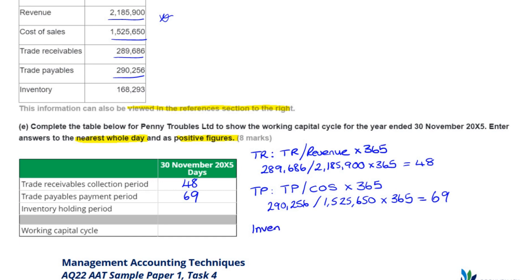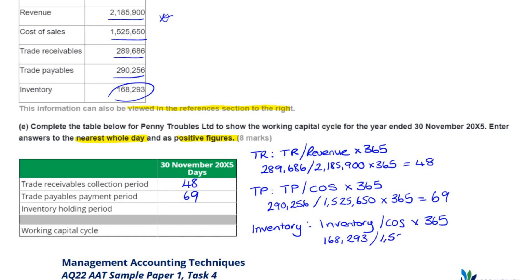The inventory holding period formula starts with inventory — reflecting the name of the calculation — divided by cost of sales, because it's related to production, multiplied by 365. Using the inventory figure of 168,293 divided by cost of sales, which we've already used, multiplied by 365, we get 40 days.